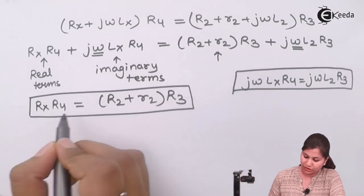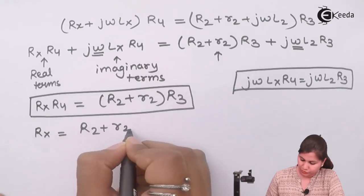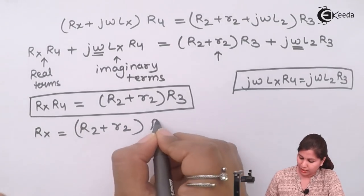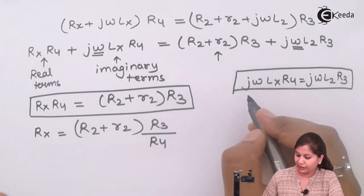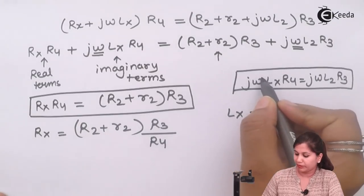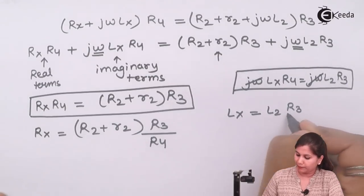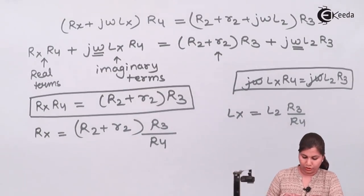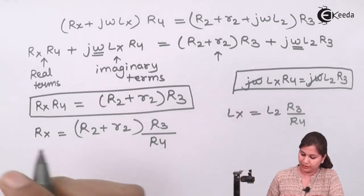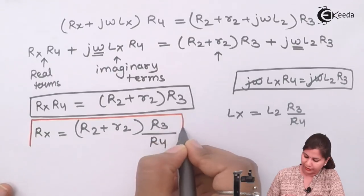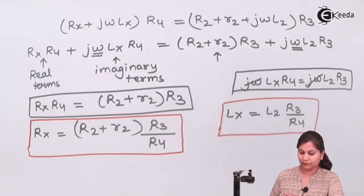From the real equation, if we want to find the value of Rx, it comes out to be Rx = (R2 + r2)·R3 / R4. From the imaginary equation, jω cancels out and we get Lx = L2·R3 / R4. By comparing the real and imaginary parts, we can get the values of Rx and Lx.